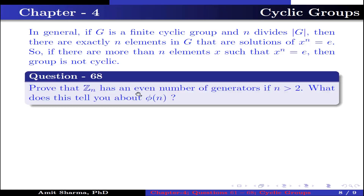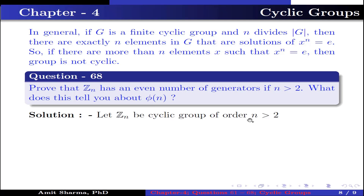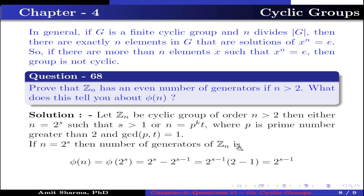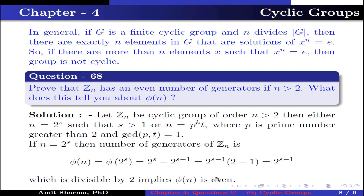Question number 68: Prove that Z_n has an even number of generators if n > 2. What does this tell you about φ(n)? Let Z_n be a cyclic group of order n > 2. Either n = 2^s where s > 1, or n = p^k · t where p is a prime greater than 2 and gcd(p, t) = 1. If n = 2^s, the number of generators is φ(n) = φ(2^s) = 2^s − 2^(s−1) = 2^(s−1), which is divisible by 2. This implies φ(n) is even.